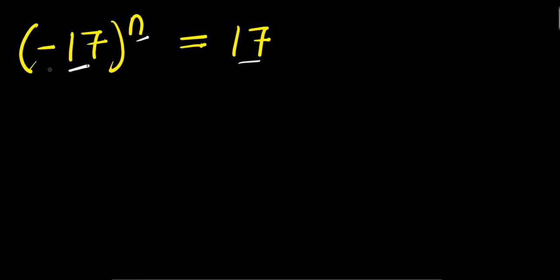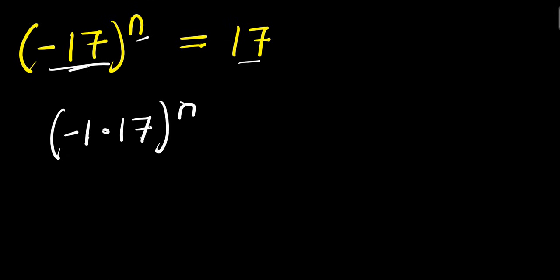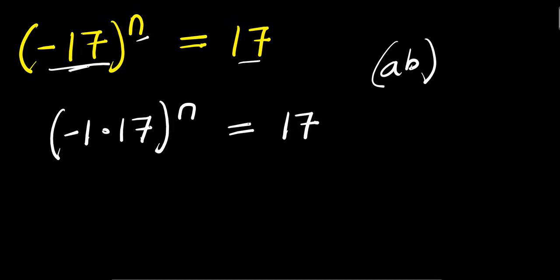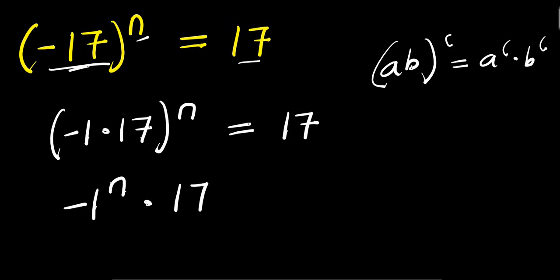As usual, we express this as negative 1 times 17 raised to the power of n equals 17. Now, if you have ab raised to the power of c, this equals a to the power of c times b to the power of c. So this will give us negative 1 to the power of n times 17 to the power of n, and this equals 17.